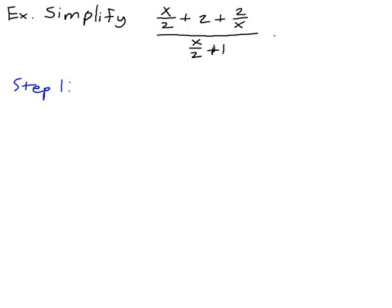Step 1 is to write both the numerator and denominator as single fractions. To do this, they need to have common denominators. Looking at the numerator, the common denominator of the numerator terms is 2x.